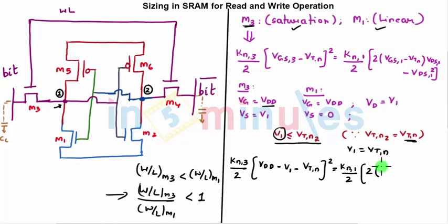The second term is equal to kn1 by 2, twice Vgs1, gate to source of 1 which is nothing but Vdd minus 0, Vdd minus Vtn, and drain to source: source is 0 and drain is at V1 for M1, drain is at V1, so into V1 minus V1 square. So this is what it is.